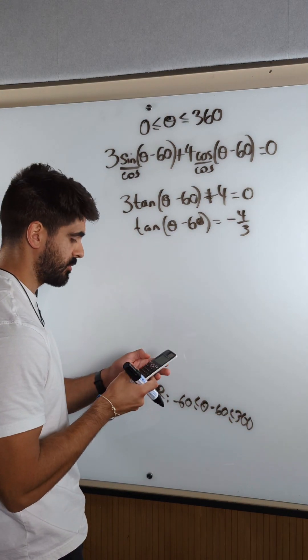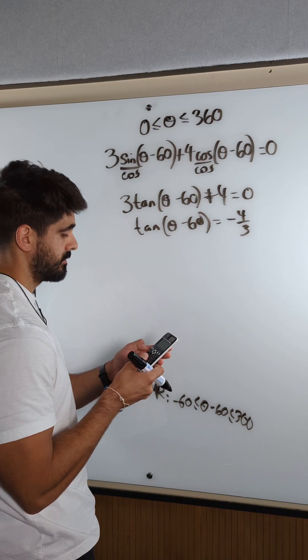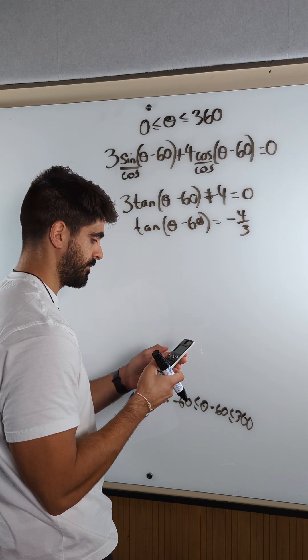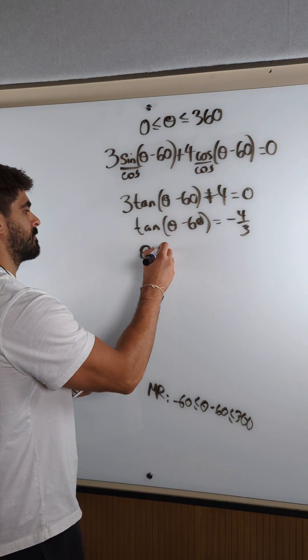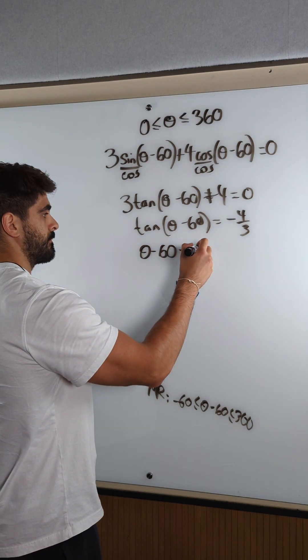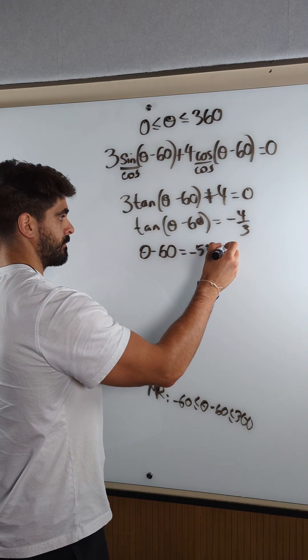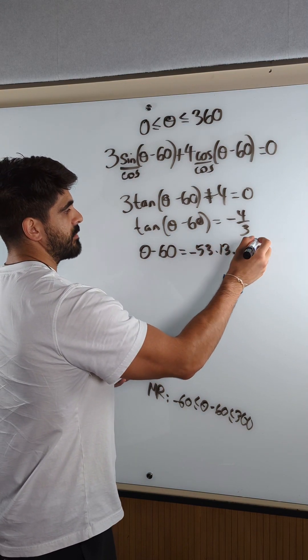We're going to do everything based on this. So when I inverse tan minus 4 thirds, I get minus 53, which is actually in the range. That's my primary value. I'm going to store it.